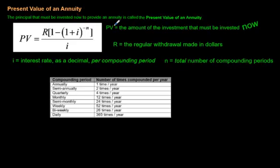So a few words here. PV stands for the present value. It's the amount of the investment that must be invested now. Here's the formula right here, and notice this formula looks a lot like the formula in the last lesson. R is just like before, it's the regular withdrawal that will be made in dollars. It would be the money that would be coming to you on a regular basis because you had previously invested it. The formula looks very similar. It's actually just a rearrangement of the future value formula, but I'm just going to go with this formula for now for the sake of keeping this video a little shorter.